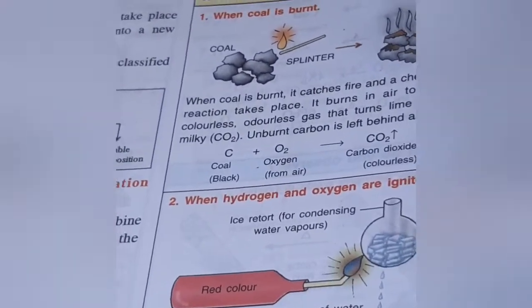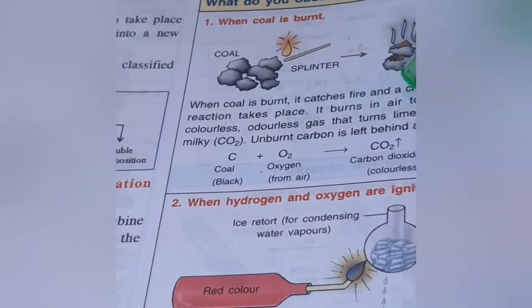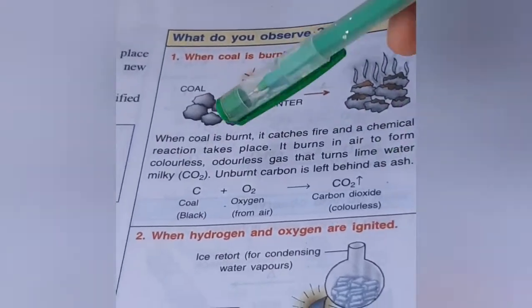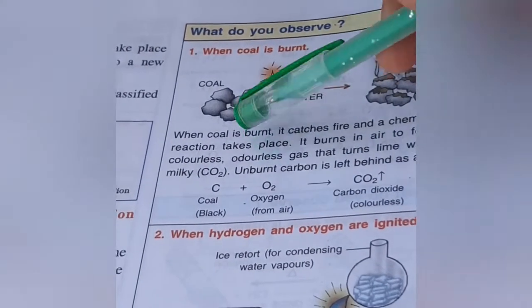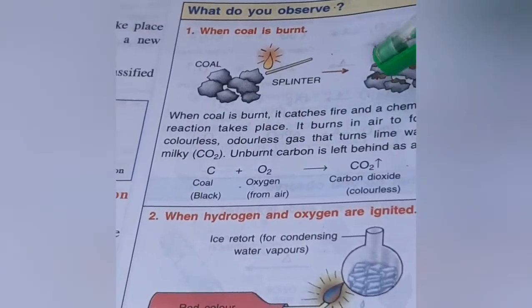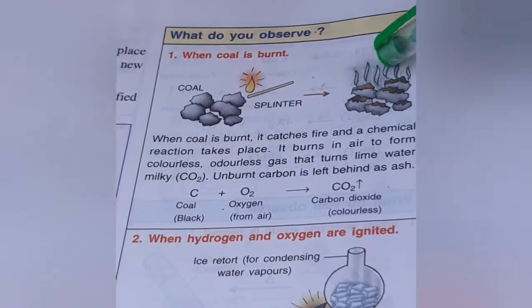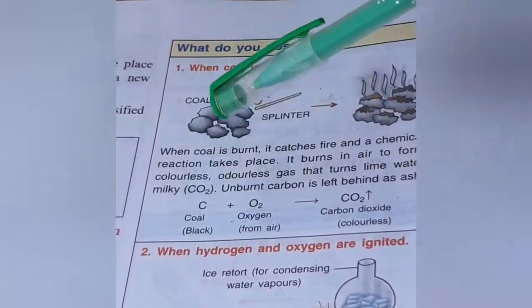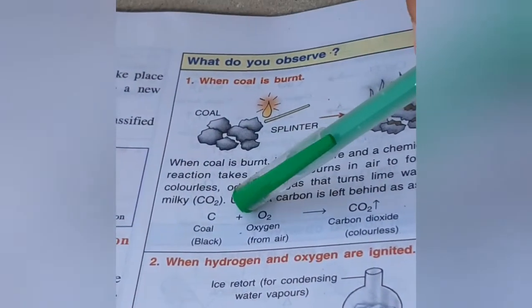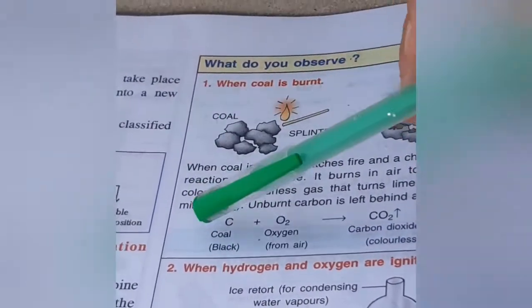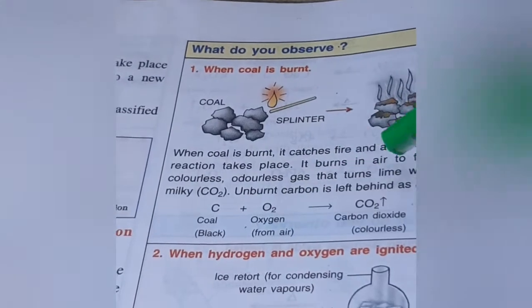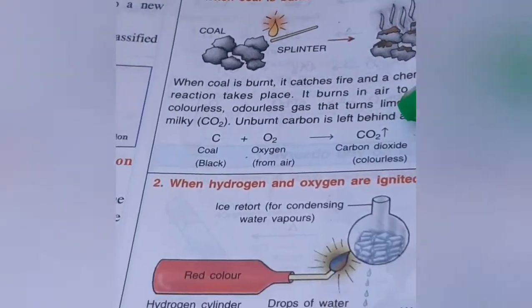Unburnt carbon is left behind as ash. The equation is: coal C plus oxygen O2 equals CO2 carbon dioxide. Coal is black and oxygen from the air produces colorless carbon dioxide.